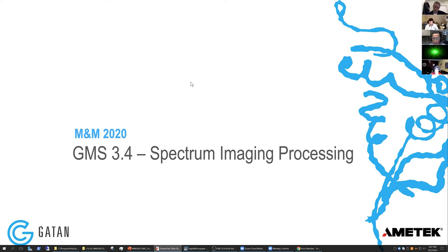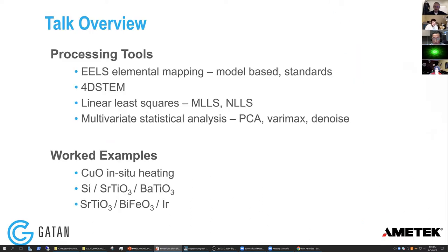Great, just before I start — can you hear my audio? Yeah, you sound great. Okay, so this is the workshop we prepared, basically spectrum imaging processing. I'm going to cover a bunch of processing tools — loosely: elemental mapping for EELS, model based, standards based, we'll look at some 4D STEM, the linear least squares tools — multilinear least squares fitting, non-linear least squares fitting, and finally multivariate statistical analysis tools, so some PCA right at the end.